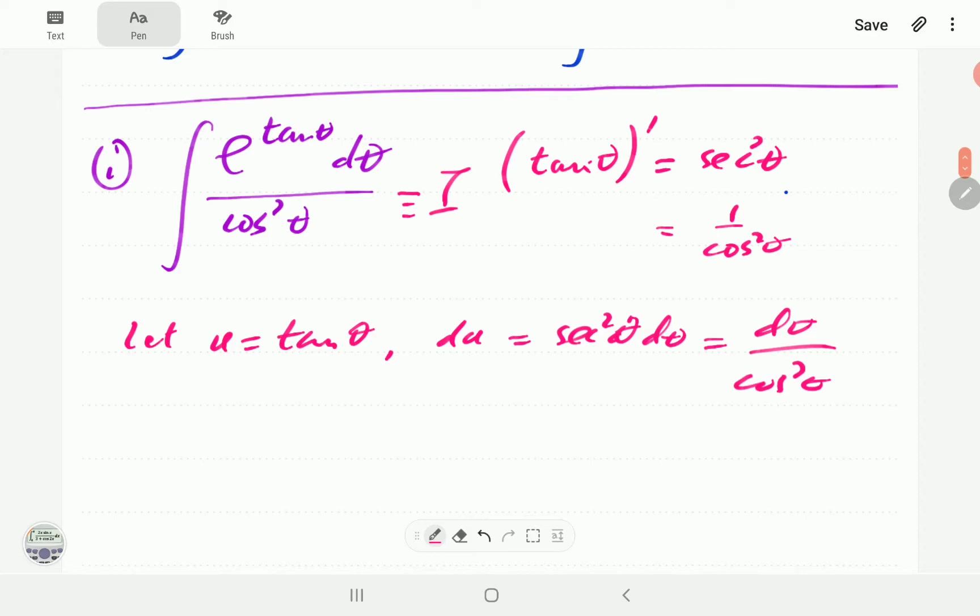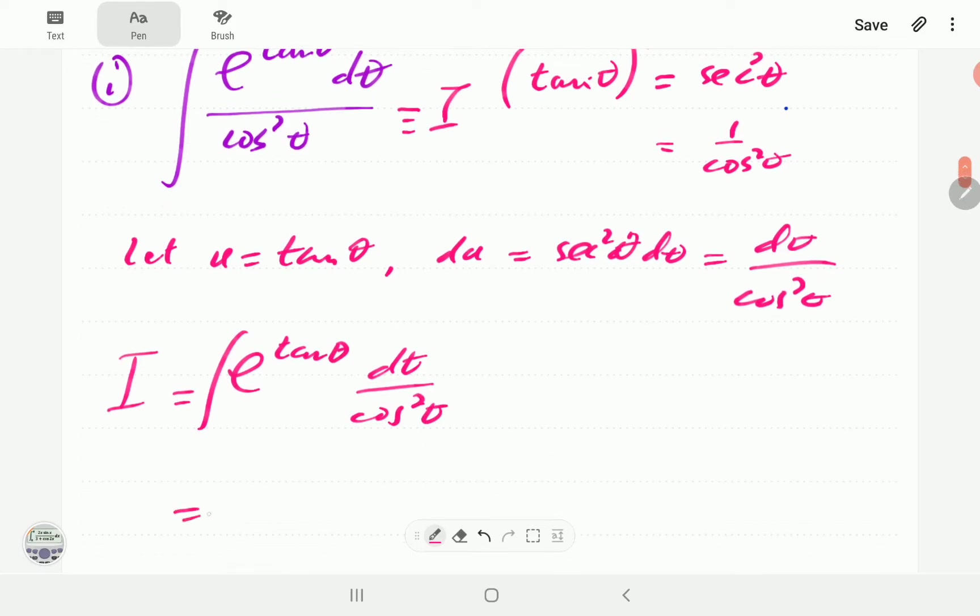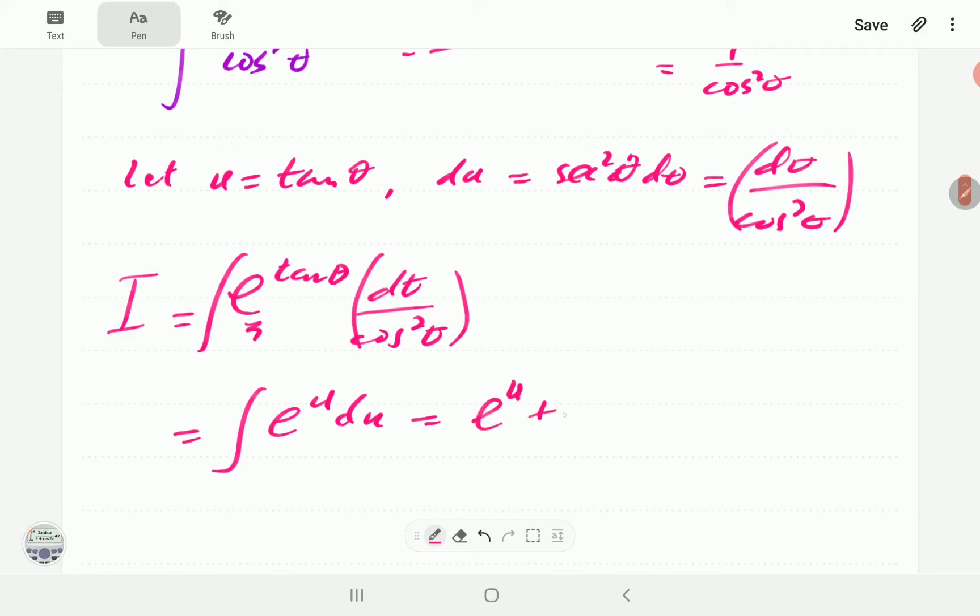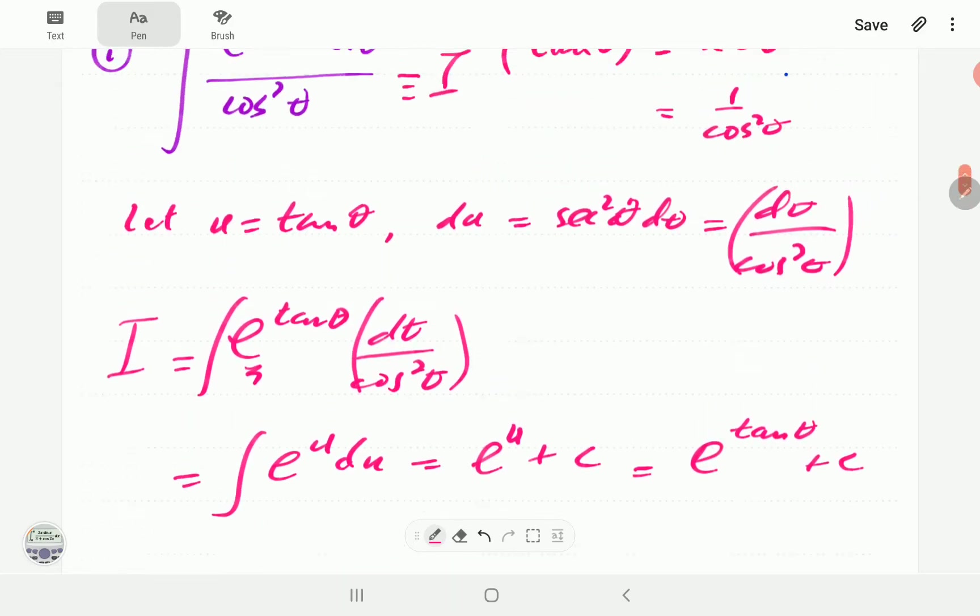Our integral can be written as integral of e^(tan θ) dθ over cos²θ, which means this bit is e^u and this bit is just du. Then the integral of that is just e^u. And then write this in terms of the original variable. That is going to be our integral.